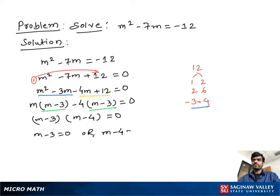Now solve each equation. If we add positive 3 on both sides, we get m equal to positive 3. Or if we add positive 4 on both sides, we get m equal to positive 4. So our final solution is m equal to 3 or m equal to 4.